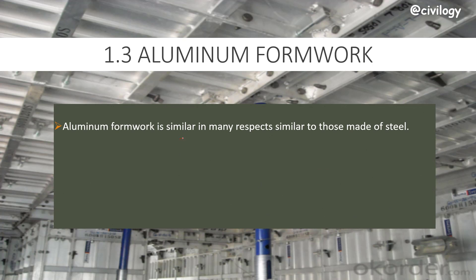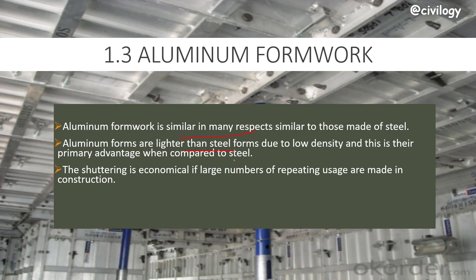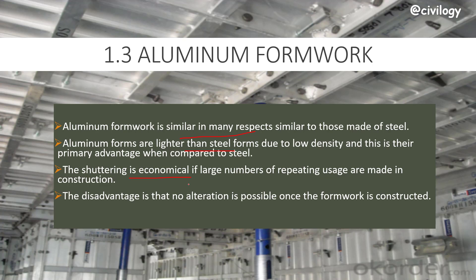Aluminum formwork is similar in many aspects to steel formwork. Aluminum forms are lighter than steel forms due to lower density, which is their primary advantage. The shuttering is economical when a large number of repeated usages are made. A disadvantage is that no alteration is possible once the formwork is constructed on site.